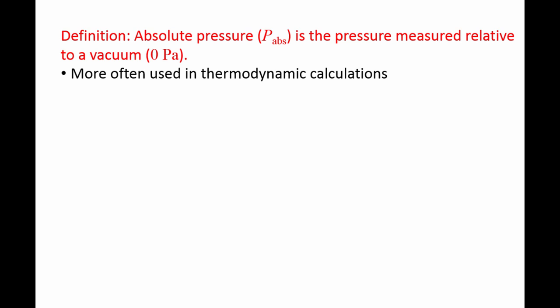If we measure the pressure of a fluid relative to the pressure in a vacuum, which is zero, we are measuring the absolute pressure. The absolute pressure, denoted by P abs, is more often used in thermodynamics calculations.